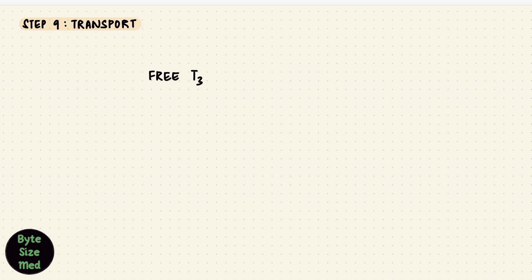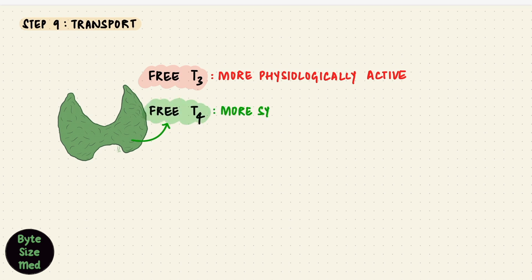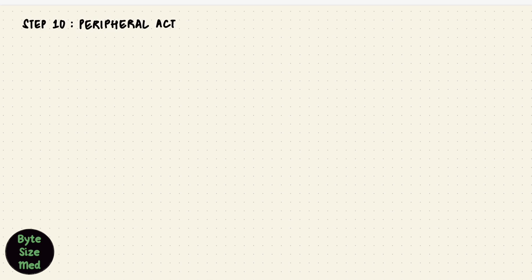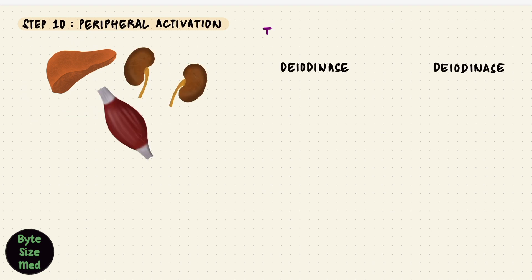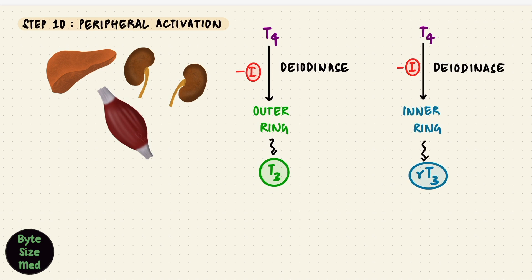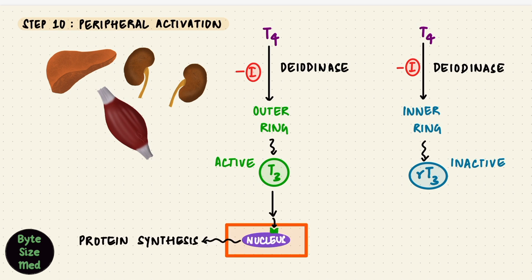That's taken care of in step 10, peripheral activation. We're almost at the end here. In organs like the liver, kidney, and skeletal muscles, there is a deiodinase. This is going to remove the iodine from the outer or inner ring of T4. That converts T4 to T3 if it removes it from the outer ring, or reverse T3 if it removes it from the inner ring. Reverse T3, remember, isn't active in the body. It's this T3 which is active and it's going to go and bind to the nuclear receptors of the target cells and synthesize proteins. That's how it exerts its effects in different parts of the body, like on carbohydrate, fat, and protein metabolism, bone growth and maturation, brain development, etc.